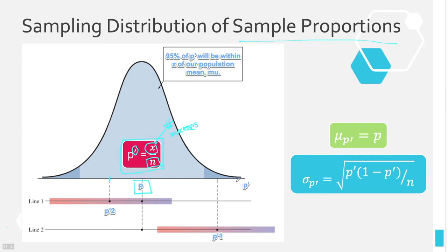The sampling distribution of sample proportions is the distribution of all sample proportions. For example, if we took the entire population of Austin as our population and took a sample of size 30 to see how many females there are — female being our definition of success — then the proportion of females in that sample might be 0.35 or 0.95. It turns out the sampling distribution of sample proportions will be a nice normal bell-shaped curve most of the time.